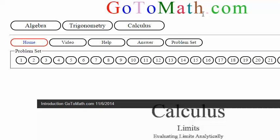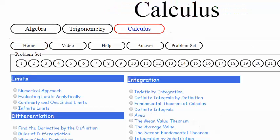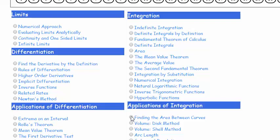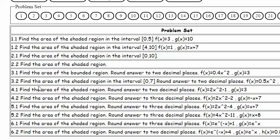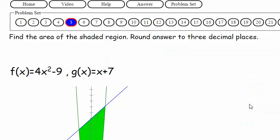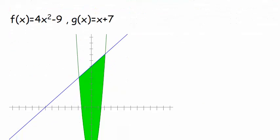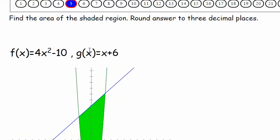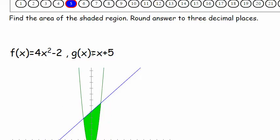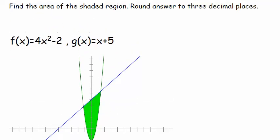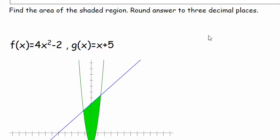We're at gotomath.com, pulling our hair out. Let's go down to find the area between the curves. And we're doing 5.1 for the third time. Let's see if we can shrink that picture down a little bit. How about that one? That'll work. Find the area of the shaded region, round answer to three decimal places. So let's write this down.